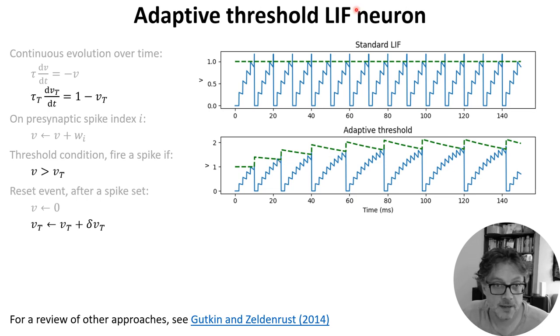In the equations, we represent that by having a new exponentially decaying differential equation for the threshold, by modifying the threshold condition so that it's V greater than VT rather than V greater than 1, and specifying that after a spike, the threshold increases by some small amount.